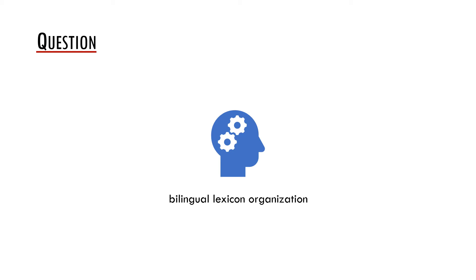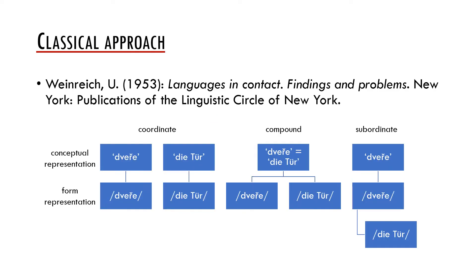The question is how are the two or more lexicons interconnected in the bilingual brain? A classical approach to this question was a proposal by Uriel Weinreich. Weinreich distinguished three types of bilingualism based on the relation between conceptual and form representations. The first type is coordinate bilingualism. Coordinate bilinguals have separated conceptual representations for each language. For example, a Czech-German coordinate bilingual would differentiate between the concept dveře, which has the form dveře in Czech, and a separate concept which has a different form in German.